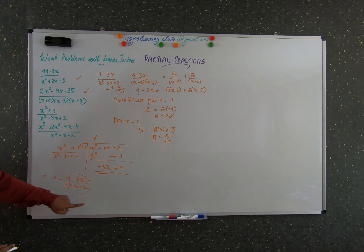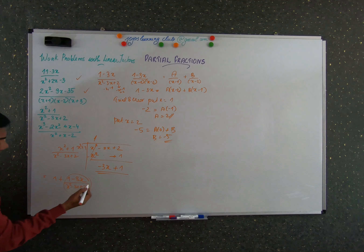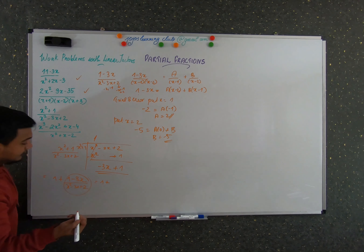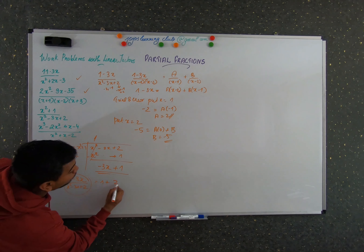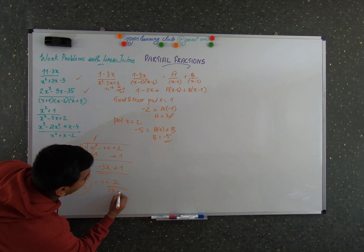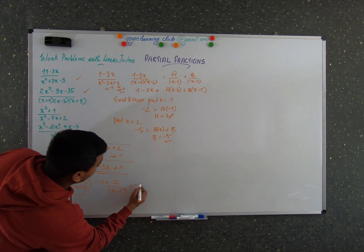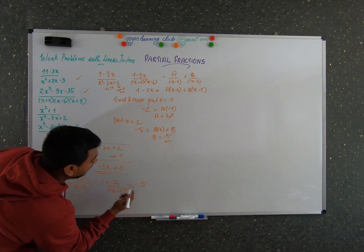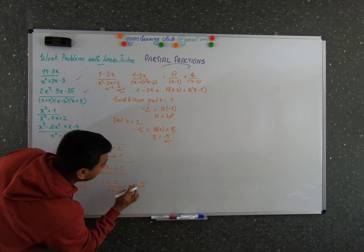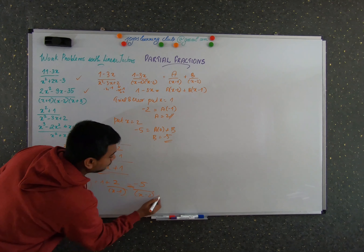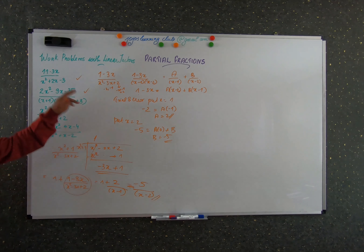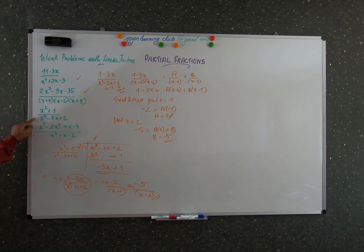So now you can write the full answer as 1 plus 2 by (x minus 1) plus minus 5 by (x minus 2), which simplifies to 1 plus 2/(x minus 1) minus 5/(x minus 2). This is the final answer for this polynomial expression.